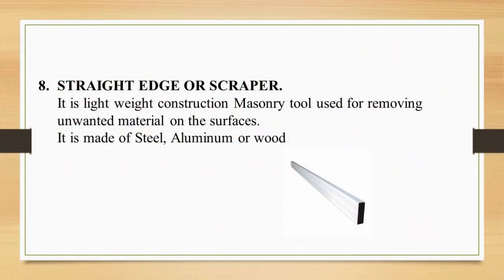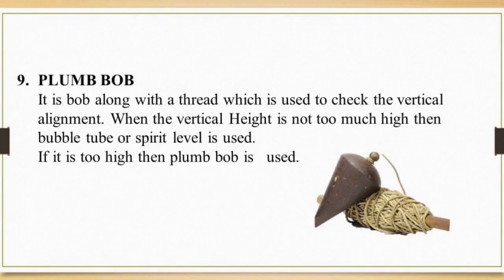Tool number eight is the straight edge or scraper. It is a lightweight masonry tool used for removing unwanted material from a surface. It may be made of steel, aluminum, or wood. The ninth tool is the plumb bob — a weight on a thread used to check vertical alignment. When the height is not too great, the spirit level is used; if it is too high, the plumb bob is used instead.